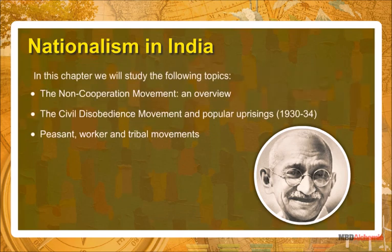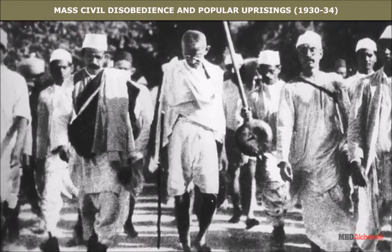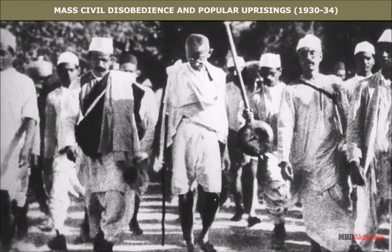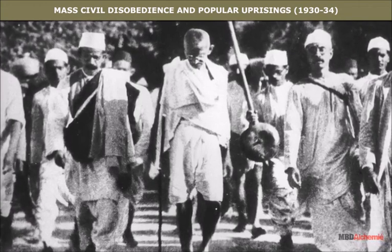In this chapter, we will study the following topics: The Non-Cooperation Movement and Overview, the Civil Disobedience Movement and Popular Uprising 1930–34, and Peasant, Worker and Tribal Movements. The circumstances that compelled Mahatma Gandhi to launch the Civil Disobedience Movement were as follows.